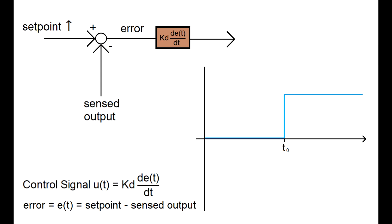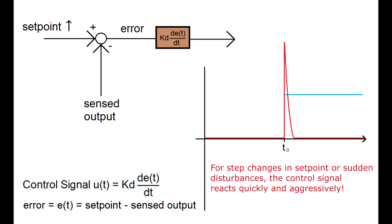The D term in response produces a control signal like this. You can see how quick and aggressive this control signal is. This is the main benefit of the derivative term, is that for a sudden change, maybe due to disturbances or a change in the set point, the controller reacts quickly and aggressively.